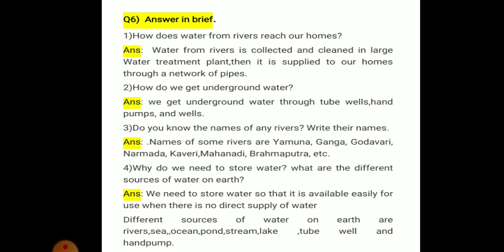Names of some rivers: Yamuna, Ganga, Godavari, Narmada, Kaveri, Mahanadi, Brahmaputra, Indus. अगर आप चाहो, तो अगर आपको कुछ और नदी के नाम भी मालूम हैं, तो आप लिख सकते हो.